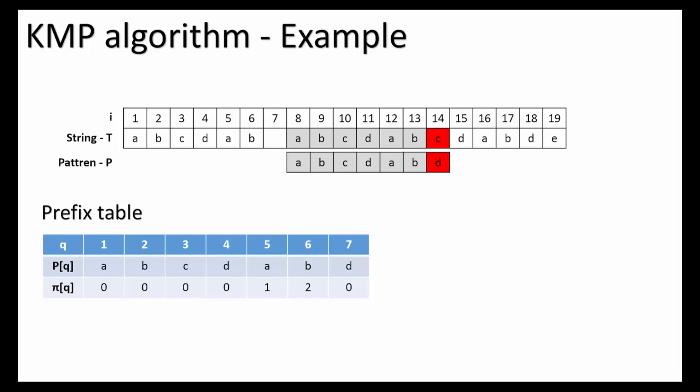Until c and d, which are mismatched. So we check the prefix table pi[6], which is 2, and shift the pattern to the right, 6 minus 2, 4 times.